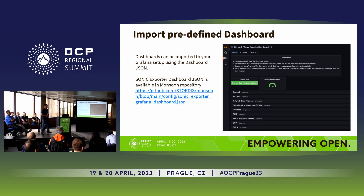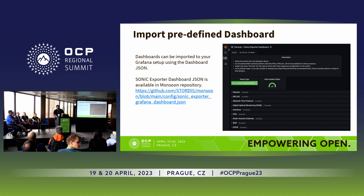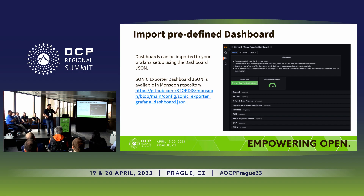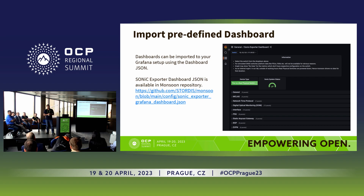Questions? The first question: how do you actually install the containers on the switches — do you connect to a registry, or do it manually? Currently you have to do it manually. We have the Sonic exporter Docker image published publicly on Docker Hub. There is a single-liner command on the repository — you copy and paste it on the device, and roughly that's it, as far as the Sonic exporter is concerned. You will also have to do Grafana and Prometheus installation. For this demo, I'm running those on containers, and the single-liner commands to start those Docker containers are also mentioned on the repository readme page.